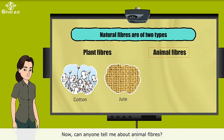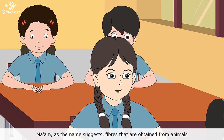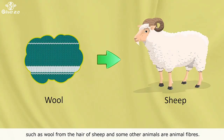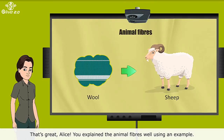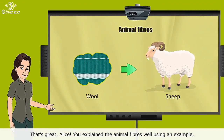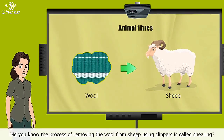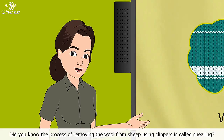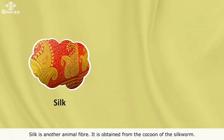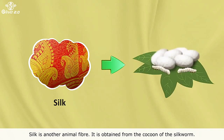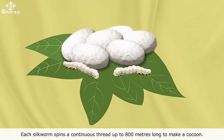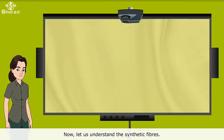Now, can anyone tell me about animal fibres? Fibres that are obtained from animals, such as wool from the hair of sheep and some other animals, are animal fibres. That's great, Alice. You explained the animal fibres well, using an example. Did you know the process of removing the wool from sheep using clippers is called shearing? Silk is another animal fibre. It is obtained from the cocoon of the silkworm. Each silkworm spins a continuous thread up to 800 metres long to make a cocoon.